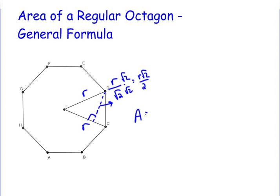The area of one triangle is one-half times the base r times the height r√2/2, which equals r²√2/4.